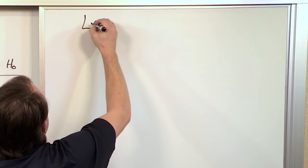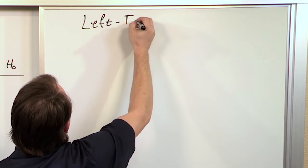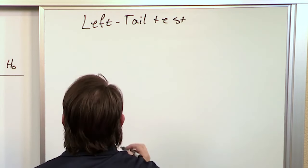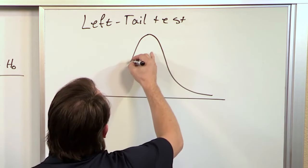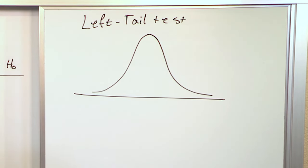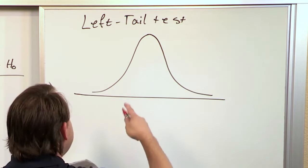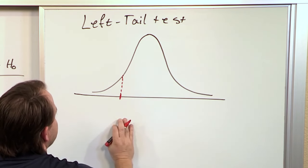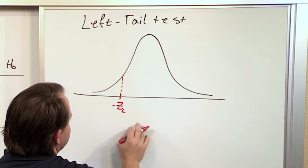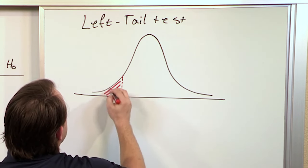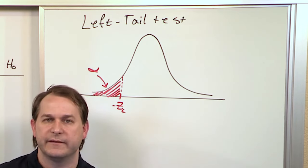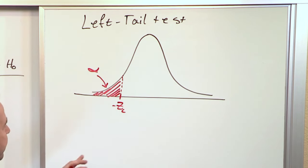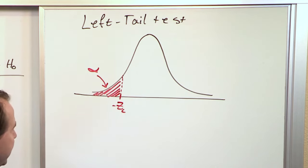Now let me show a left-tail test — it's a bit redundant but I want to make sure you understand this. For a left-tail test, everything's the same except we deal with the left-hand tail. If I have a level of significance doing a left-tail test, I shade the left tail with area alpha and find the critical value, which we call negative z sub c. That gives us the level of significance area to the left.